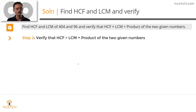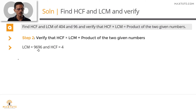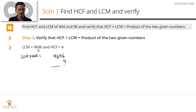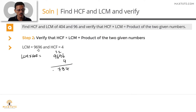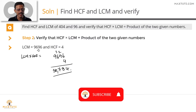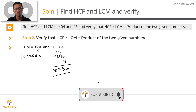Next step: verify that the product of LCM and HCF equals the product of the two given numbers. The LCM is 9696 and the HCF is 4. The product of LCM and HCF = 9696 × 4 = 38,784.